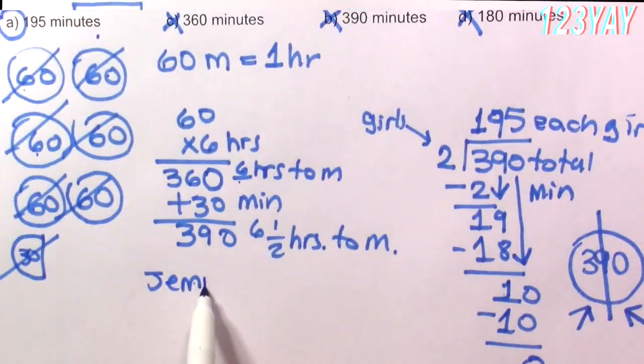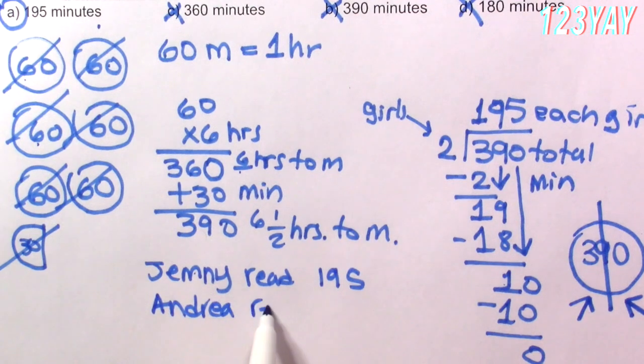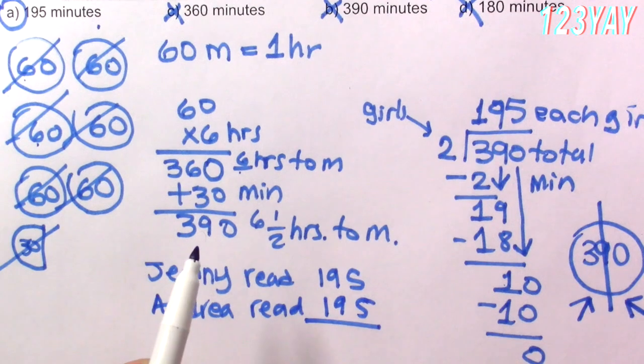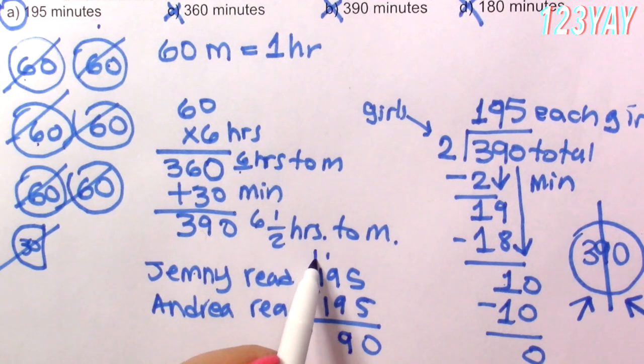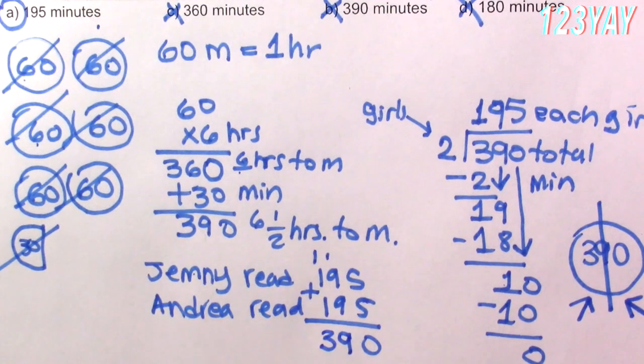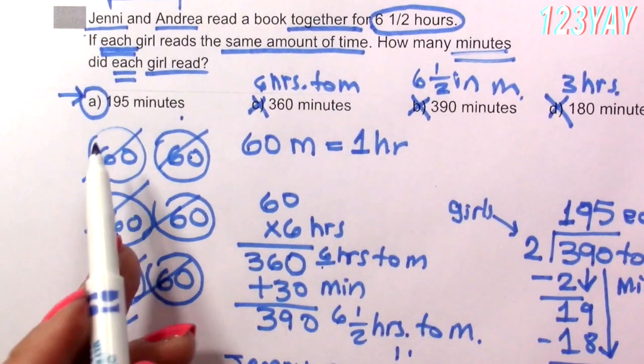that Jenny read 195 and Andrea read 195. And let me make sure, sure, sure. 5 plus 5, 10, 9 plus 9, 18 plus 1, 19, carry the 1 and 3. So this was my total minutes. So definitely we have the correct answer and it's 195.